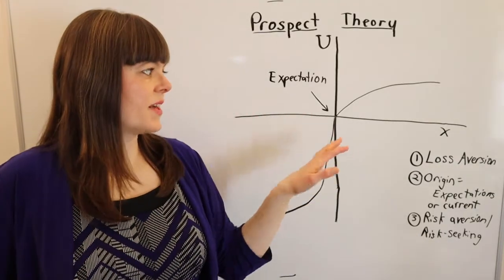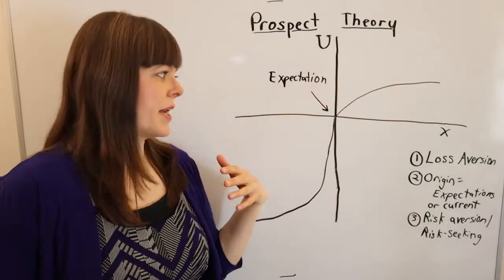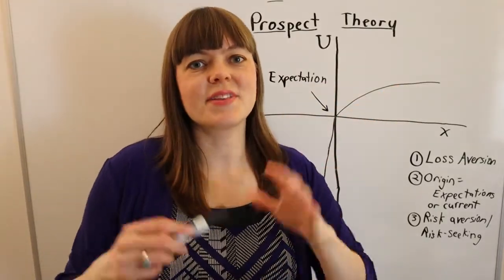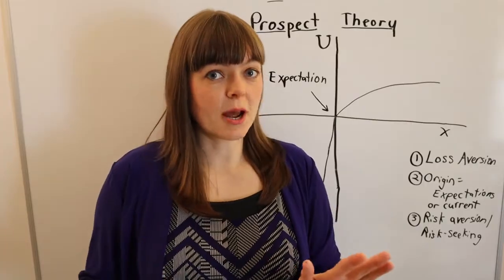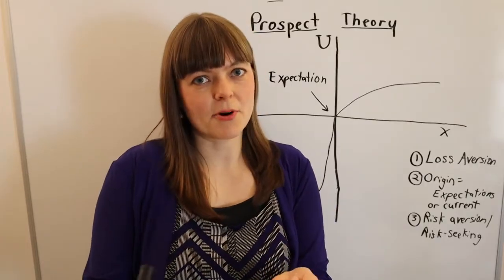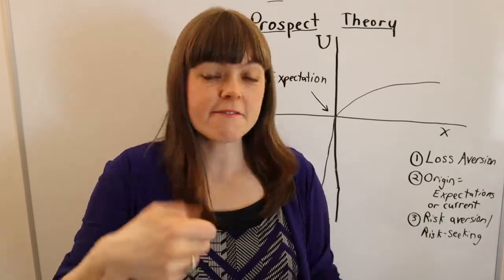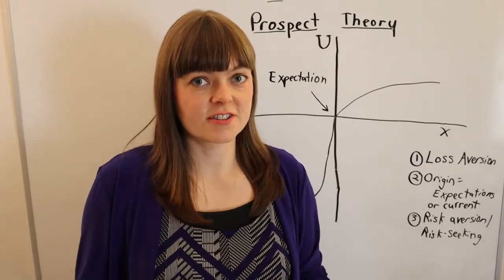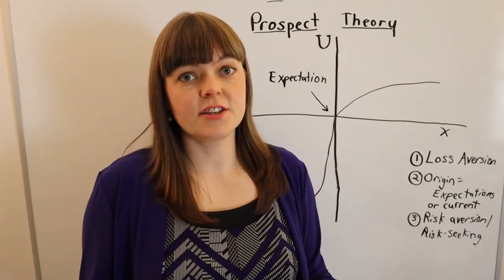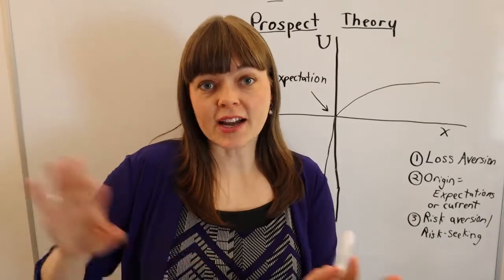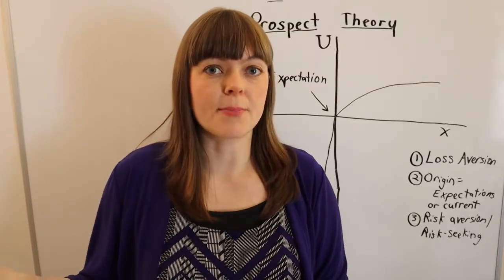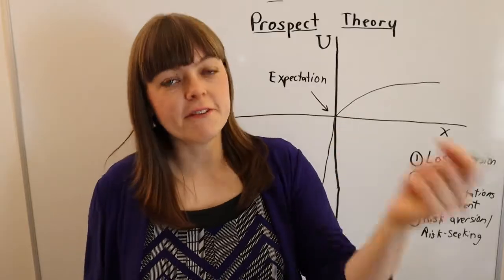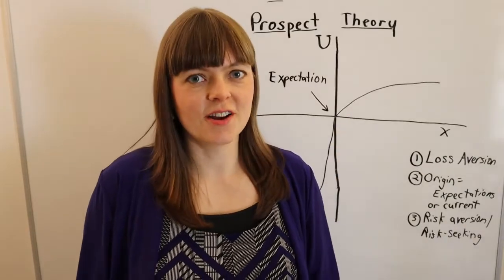Alright, so one of the classic ways of testing the risk aversion, risk-seeking nature of this is by giving people these options. So the first option is I can give you a piece of paper that guarantees you if I flip heads when I flip a coin, you win $100. If I flip tails, you win $0. So that's one option. You can take that piece of paper or you can get $50 right now for sure.